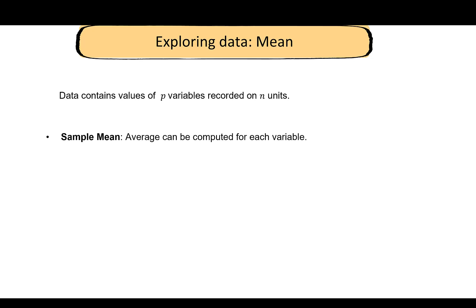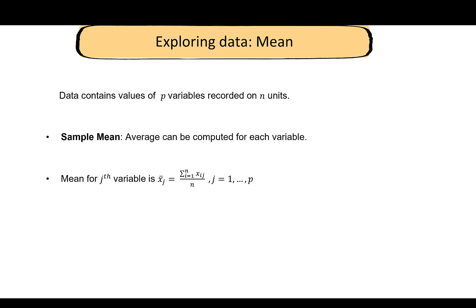Let's look at the mean. Since we have p variables, we can calculate the average for each one. The formula for the mean of the jth variable is denoted x̄_j: it is the summation over i from 1 to n of x_ij, divided by n. Here j is fixed because we are calculating the mean for the jth variable, so we are averaging all elements in the jth column.